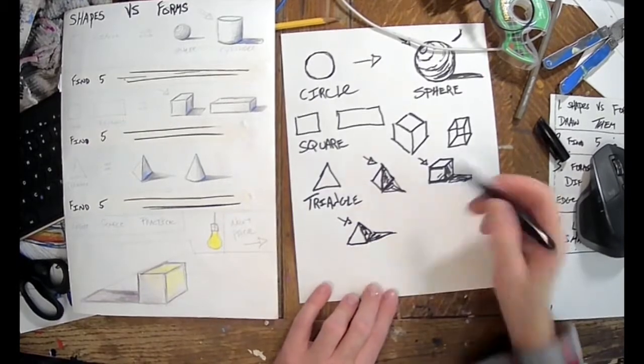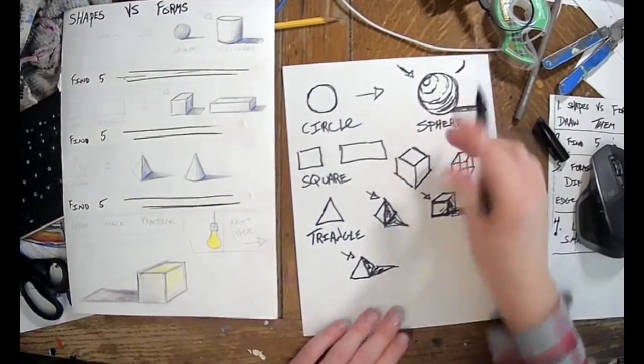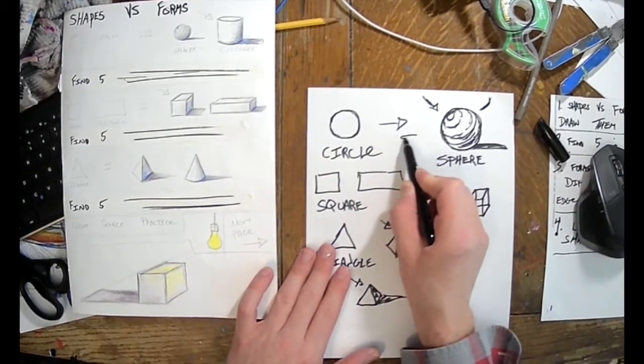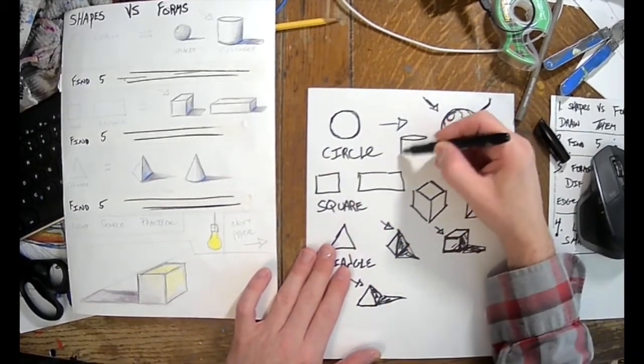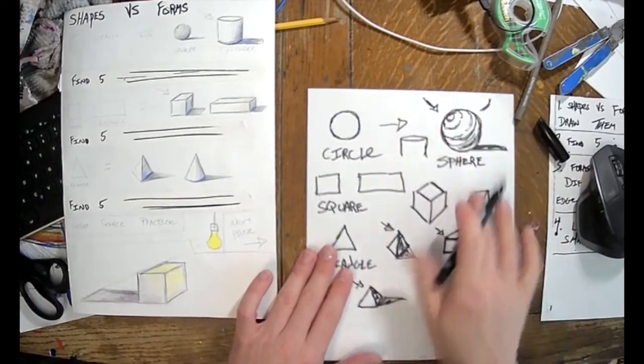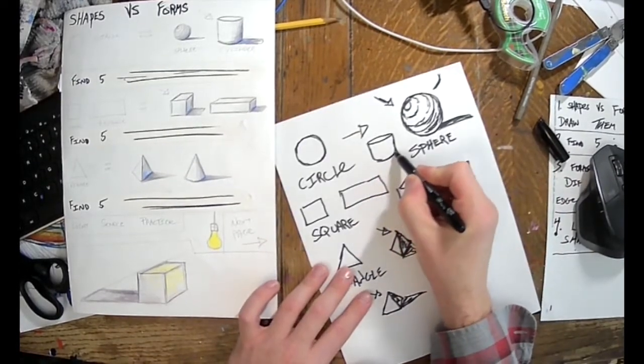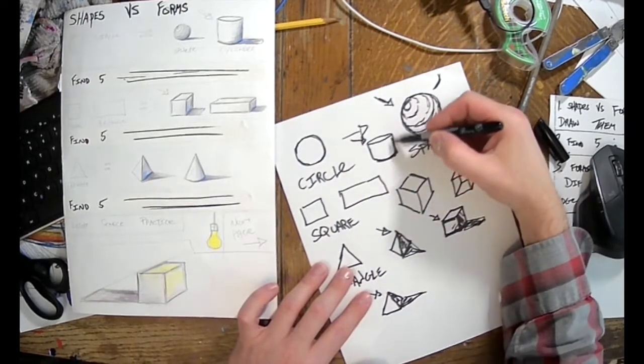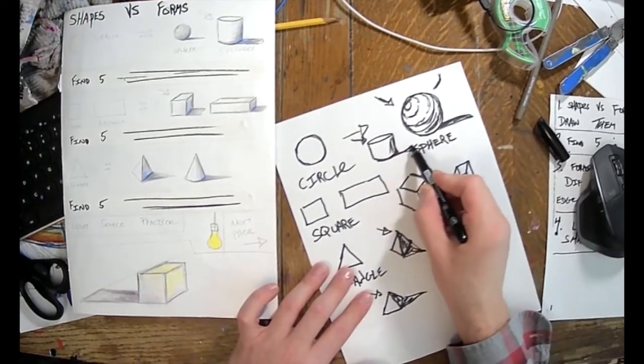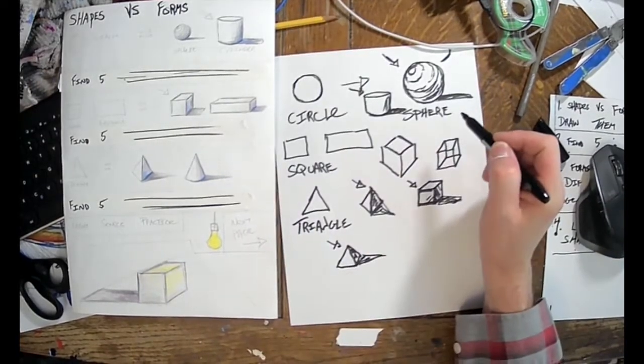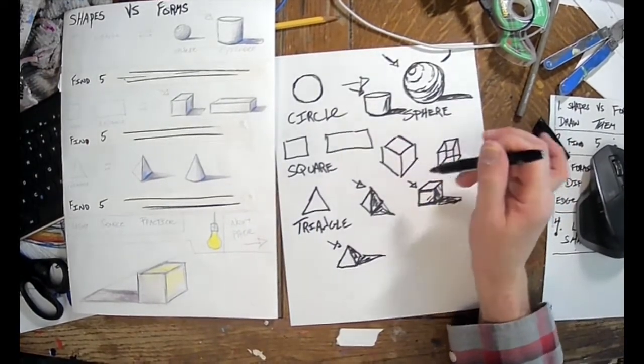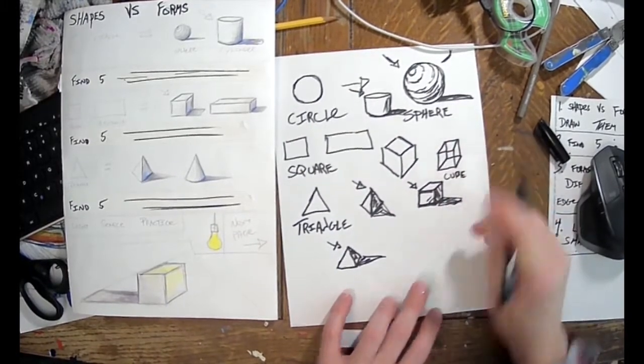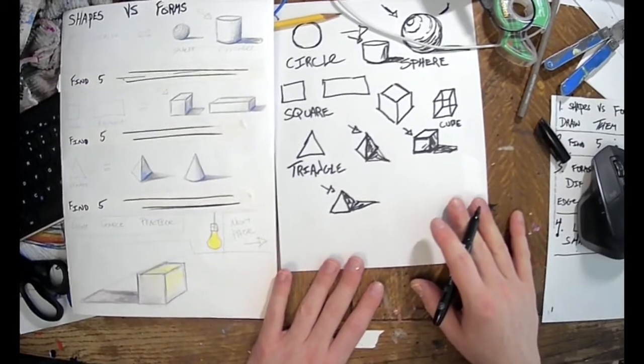Circle is also our old friend cylinder. Same thing: light source, we'll get darker on this side, drop shadow over here. Circle, sphere, square into cube.